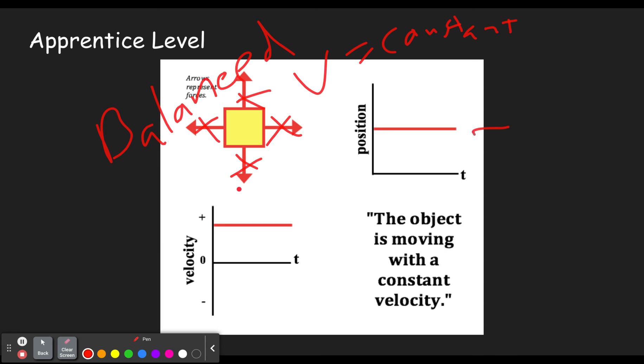So here we have a constant velocity that is zero because it's not changing position here. We have a constant velocity that is moving. Okay. In the positive direction of less. And here it says the object is moving with a constant velocity.